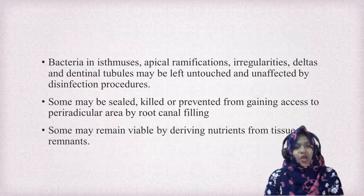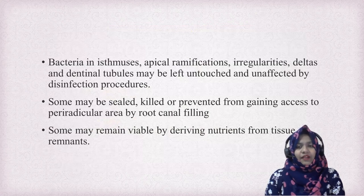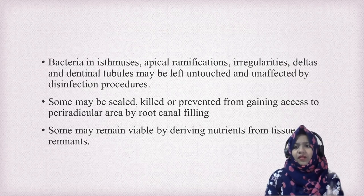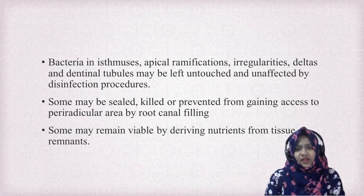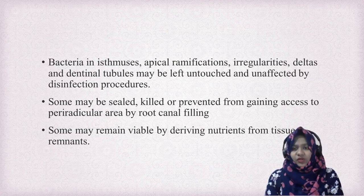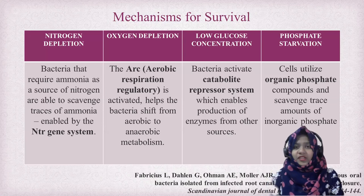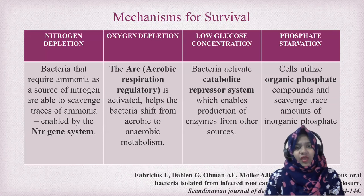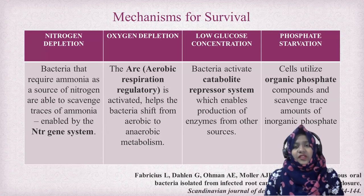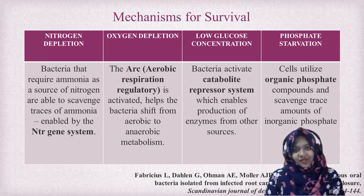Bacteria left behind in the isthmus, apical ramifications, irregularities, deltas, and tubules may be left untouched during cleaning and shaping of the root canals. Some may be sealed, killed, or prevented from gaining access to the apex by obturation. They have a wide variety of mechanisms for survival. In cases of nitrogen depletion, oxygen depletion, low glucose concentration, and phosphate starvation, bacteria have many mechanisms to overcome the changed environment and cause flare-up.